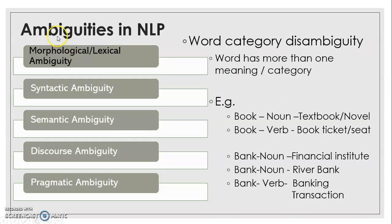Let us see what are the ambiguities in natural language processing. We have seen the different levels in which NLP takes place, and at all these levels there are different challenges and confusions. The first ambiguity is called morphological or lexical ambiguity, also called word category disambiguity. This is a word-level analysis, where a word can have more than one meaning or category.